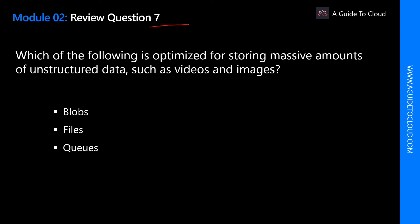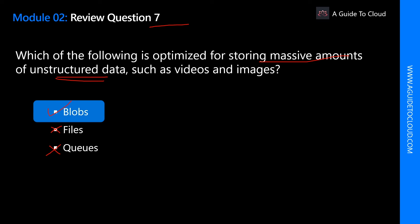Which of the following is optimized for storing massive amounts of unstructured data such as videos and images? The options are blobs, files, and queues. The key word is storing massive amounts of unstructured data. Blobs is where you keep unstructured data and supports massive storage. Files is for SMB protocol file shares; queues is for messaging services. The correct answer is blobs. Azure Blob Storage is Microsoft's object storage solution for the cloud.